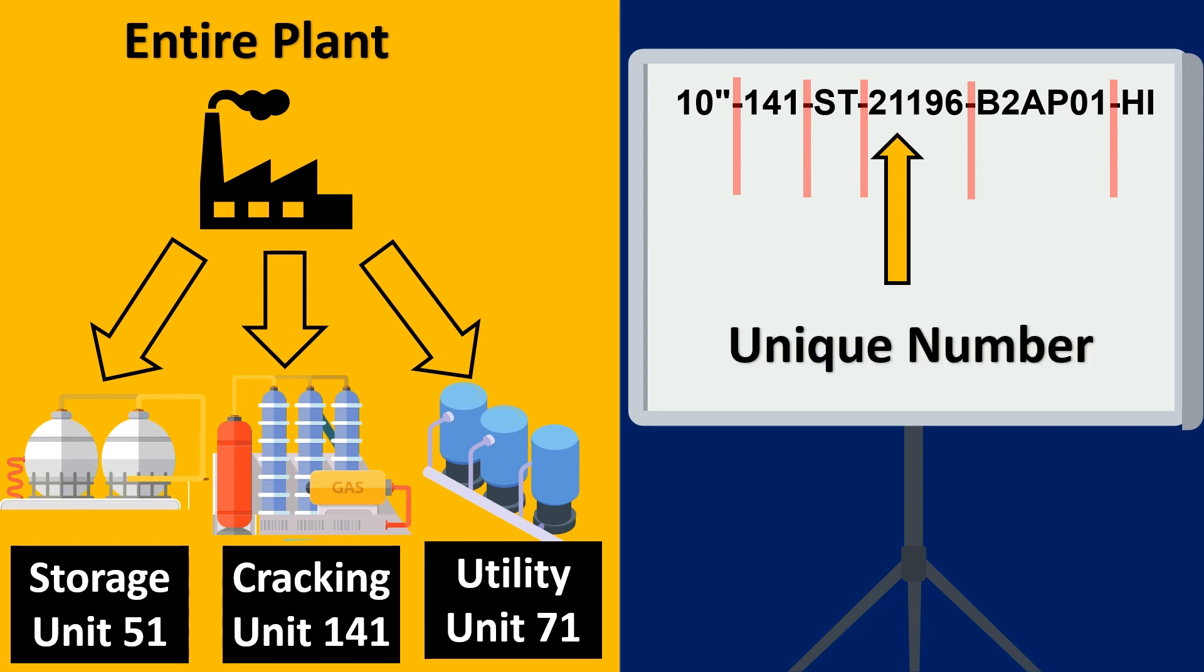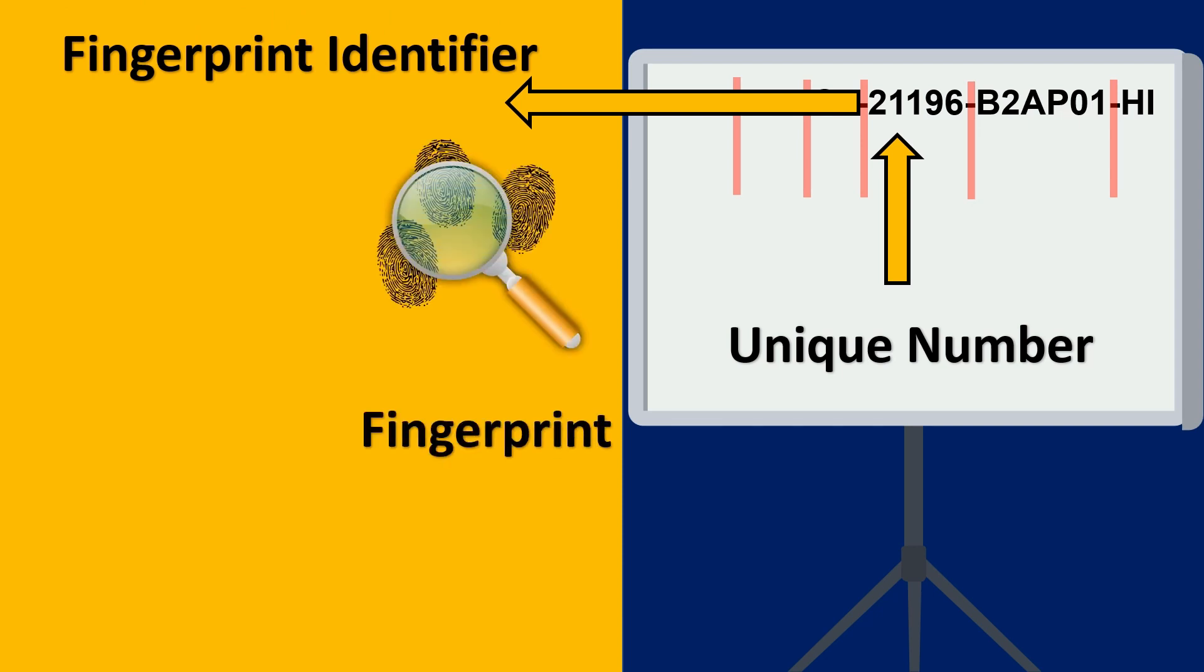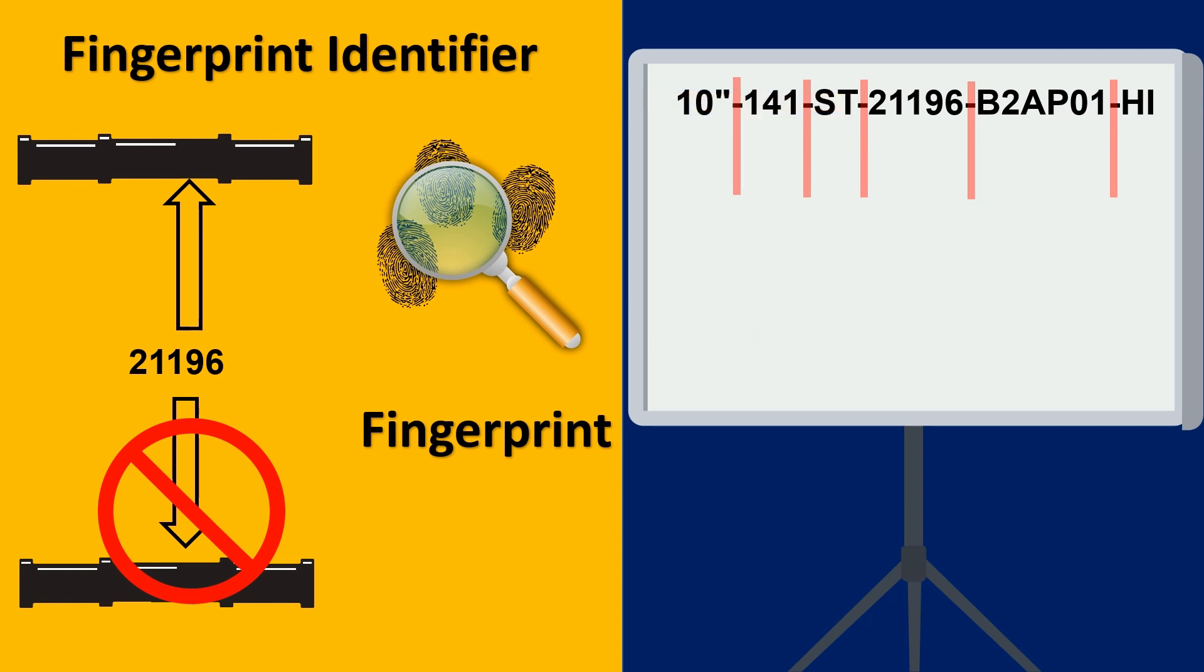The next thing is the unique number. Now this is a very important aspect. If you look at any line you can imagine this to be like the fingerprint identifier. Any two people will not have the same fingerprint. In that same case, any two lines would not have the same line number. They might have the same pipe spec. They might have the same rating but they will never have the same line number to it. So line number is unique for each pipe.